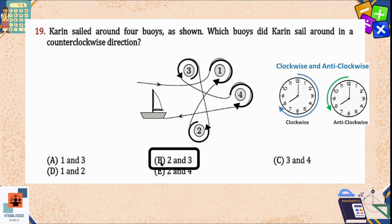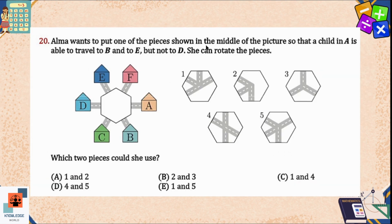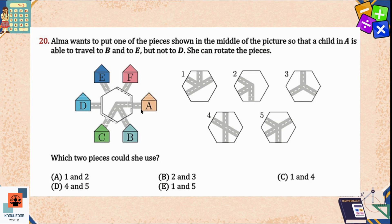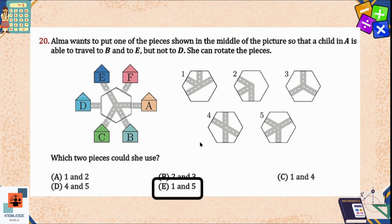Question 20: Alma wants to put one of the pieces shown in the middle of the picture so that the child at A is able to travel to B and to E, but not to D. She can rotate the pieces. Which two pieces could she use? Trying option A — it is correct, she can move from A to B and to E. Option 2 is incorrect because she cannot go to E. Options 3 and 4 are also incorrect. Option 5 is also correct because from there she can go to both E and B. So the answer is options 1 and 5 — option E is correct.